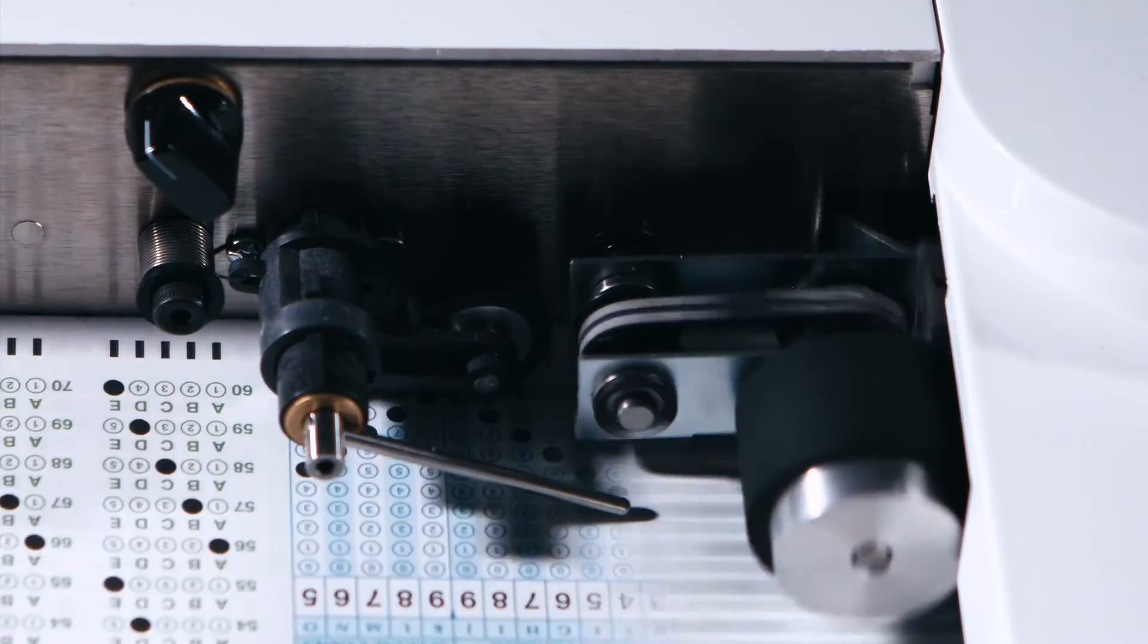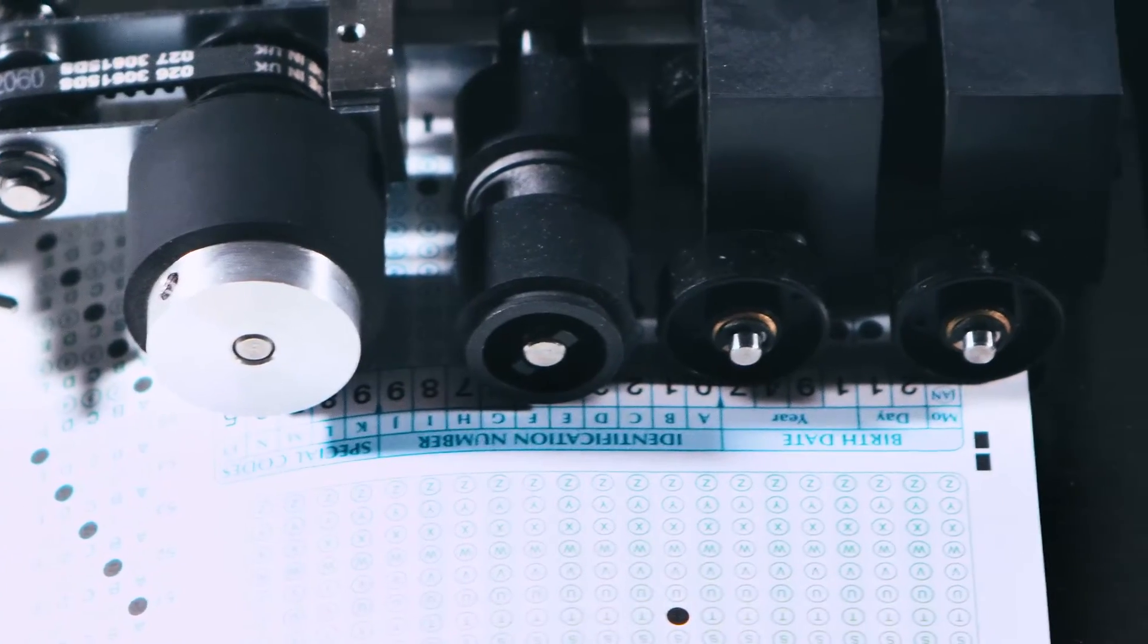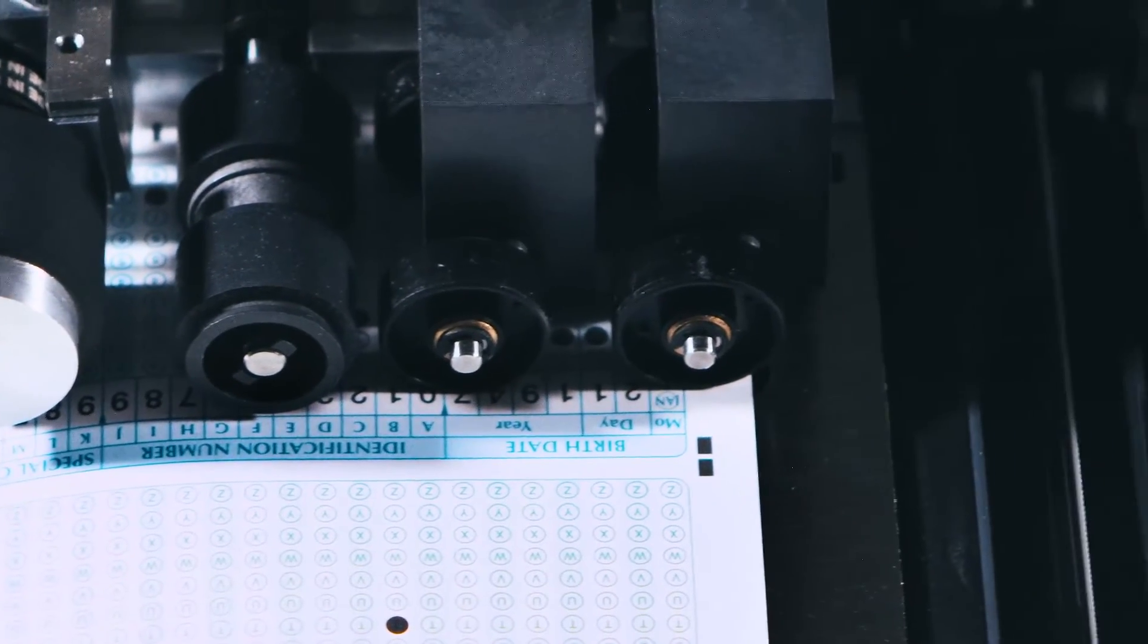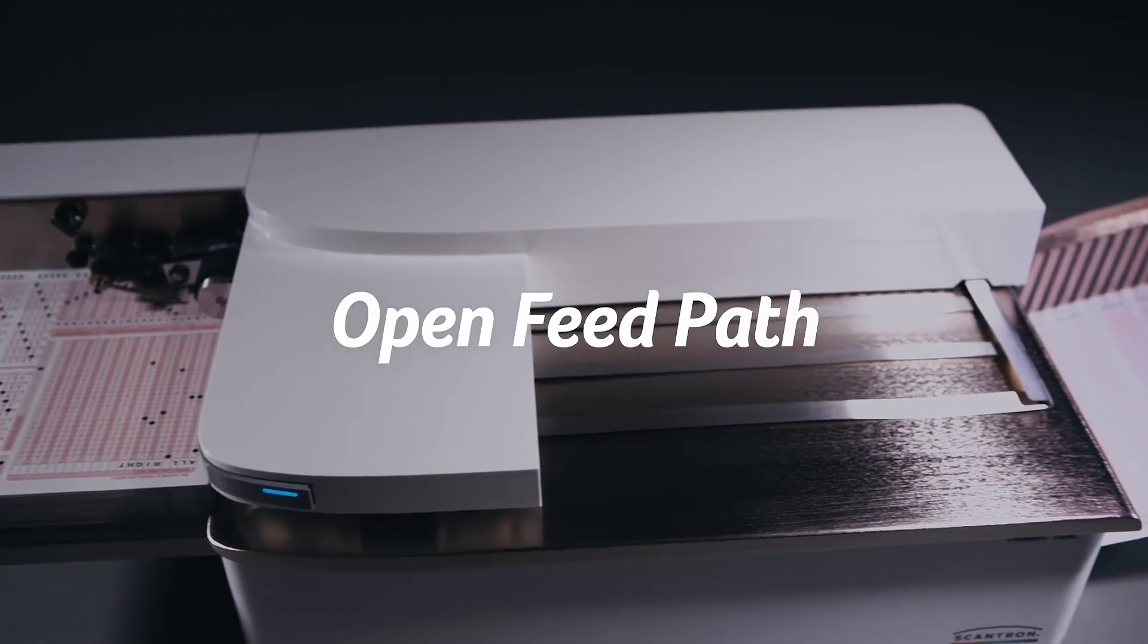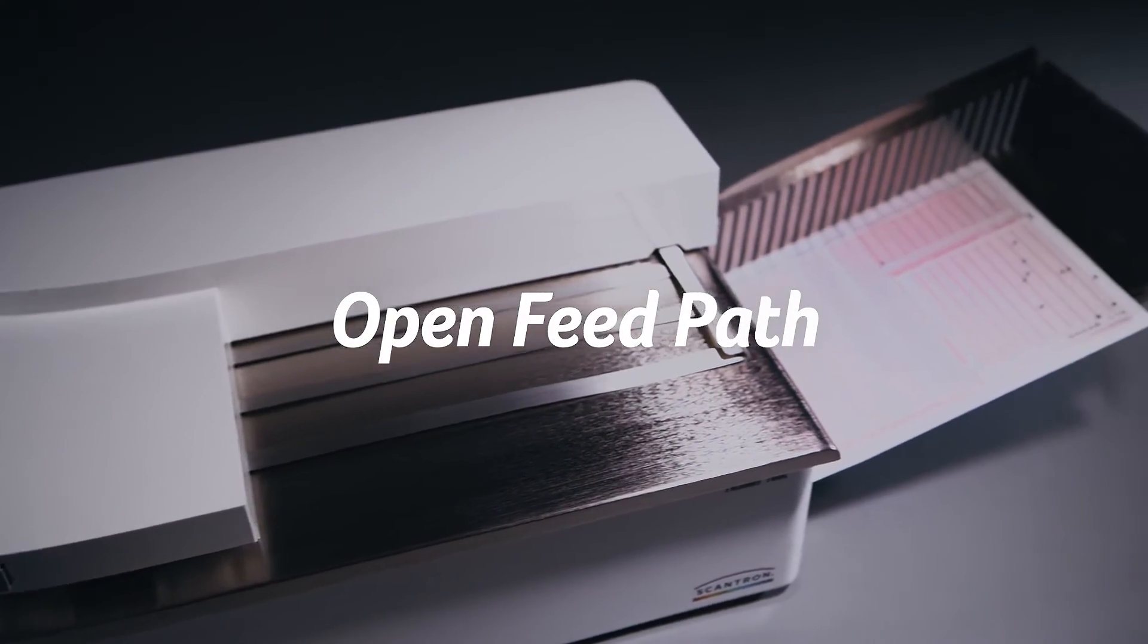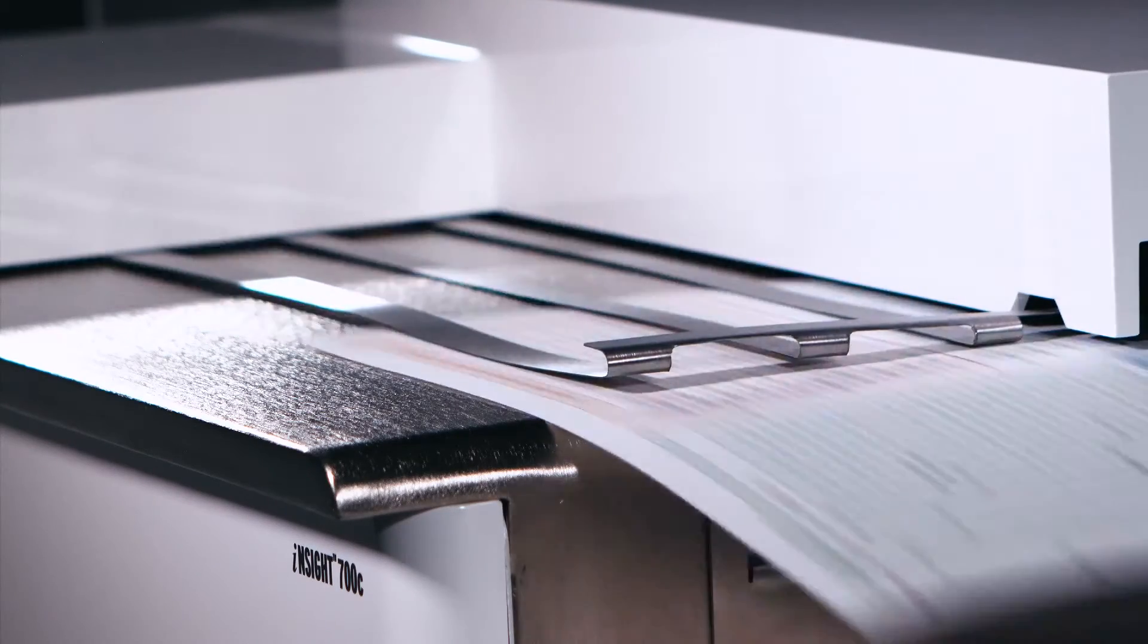Guides and rollers for virtually worry-free paper handling. Forms feed on the side to avoid smudging marks. The open feed path provides a clear view of forms being scanned while eliminating dust buildup. Immediately see and clear any path obstructions.